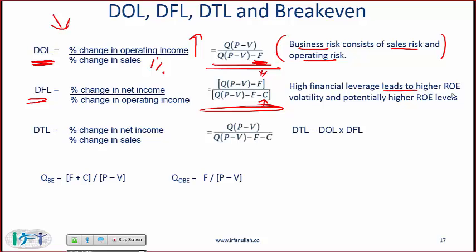High financial leverage leads to high ROE because with high leverage the value of equity goes down. ROE is net income over equity — if equity is lower, then ROE will be higher as long as you are making money. If you are not making money, then the ROE will be lower. So the riskiness or ROE volatility increases, and if on average you are making money, then potentially the ROE levels will be higher.